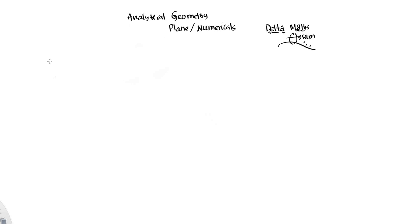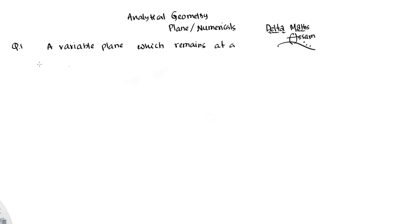This is a very important example. First, the problem to solve — question number 1. A variable plane which remains at a constant distance P from the origin.